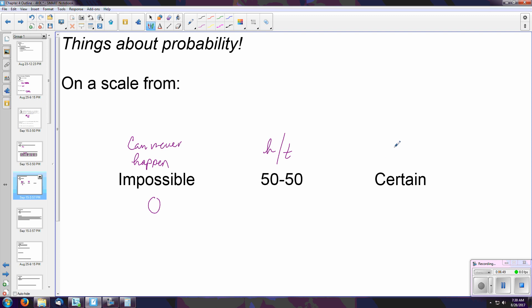A certain probability, on the other hand, means it must happen. So there's nothing else that can occur. That situation must happen. And that would be a probability of one.